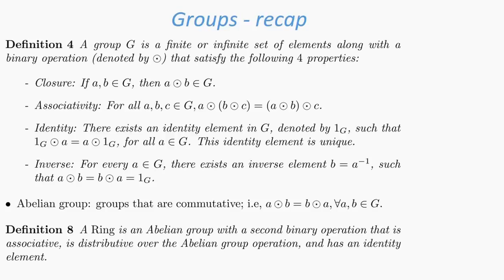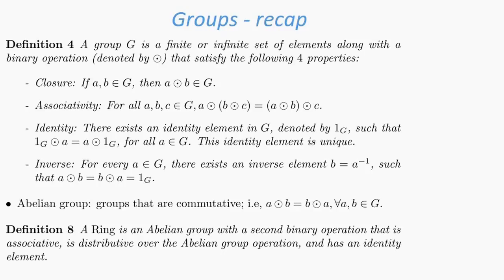We shall define an additional object. A ring is an Abelian group with a second binary operation that is associative, is distributive over the Abelian group operation, and has an identity element.